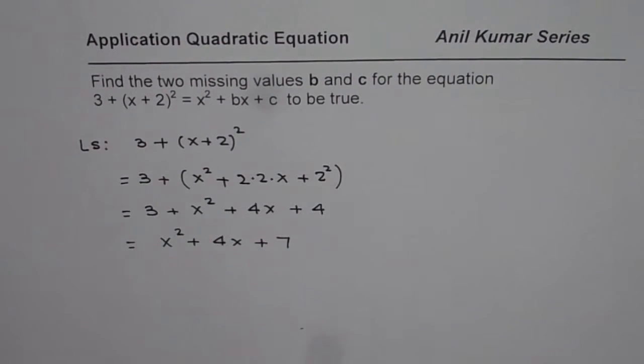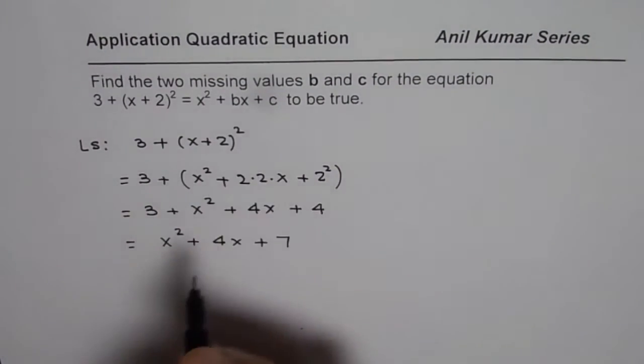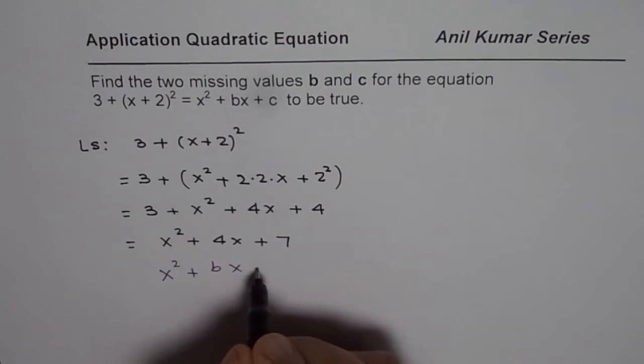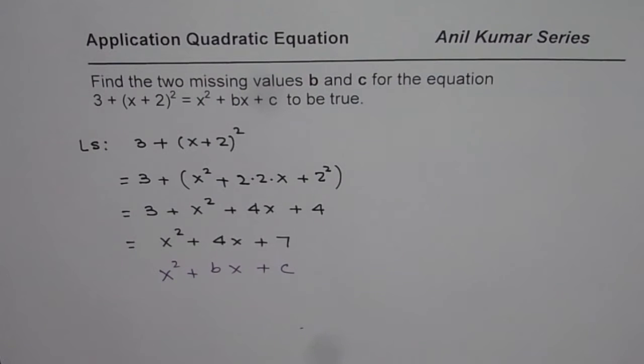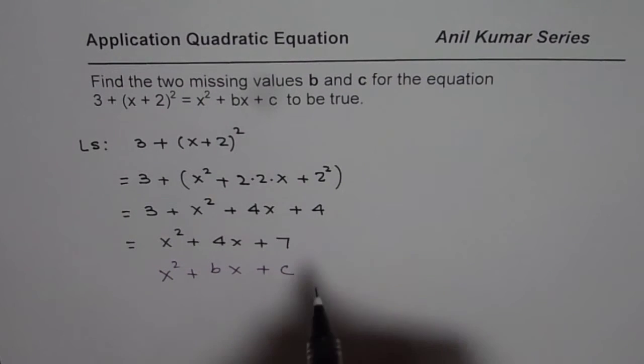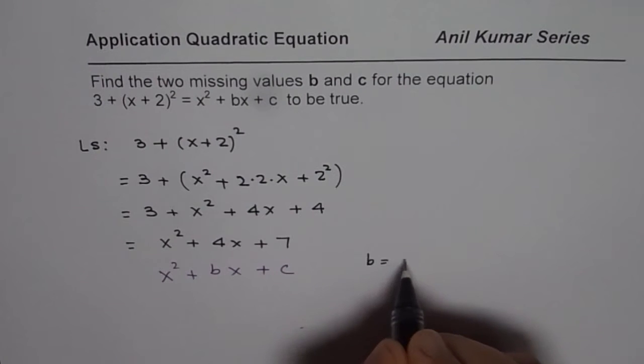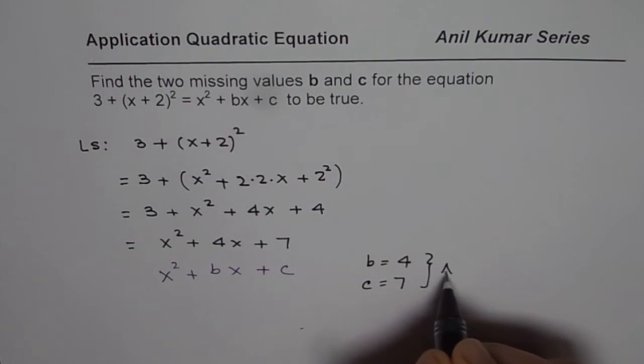We are given the equation x square plus bx plus c. So if you compare with x square plus bx plus c you can write down your answer. From here you can say that b is equal to 4 and c is equal to 7. So that becomes our answer.